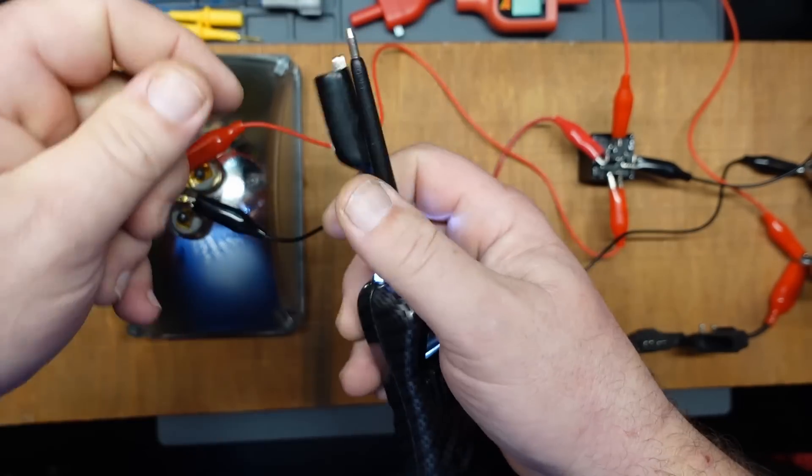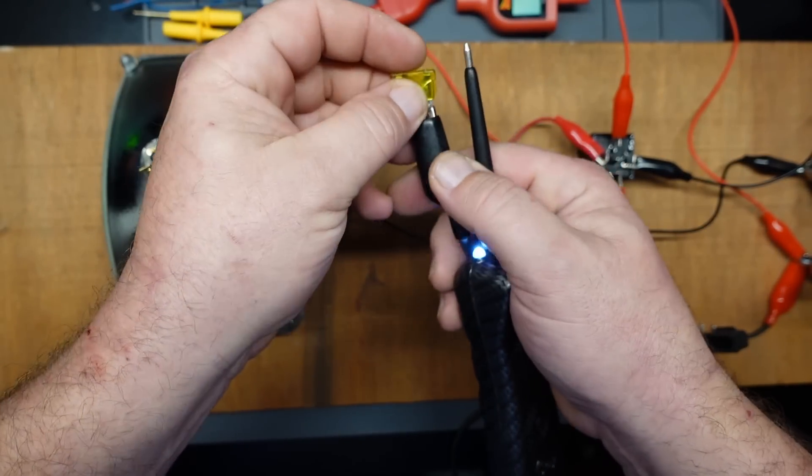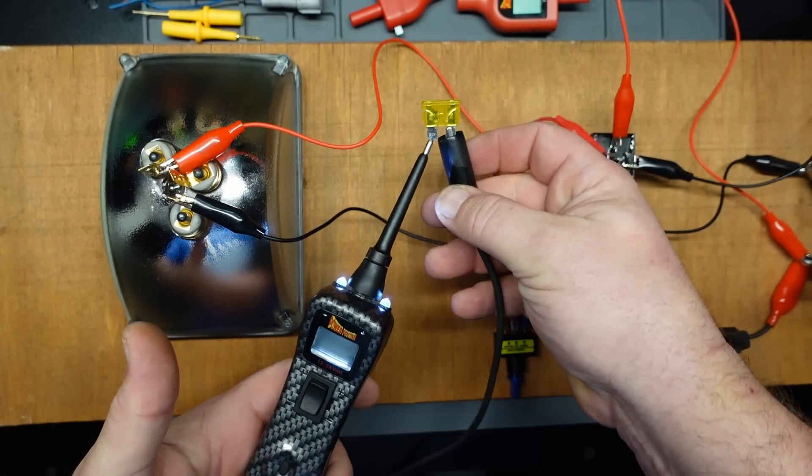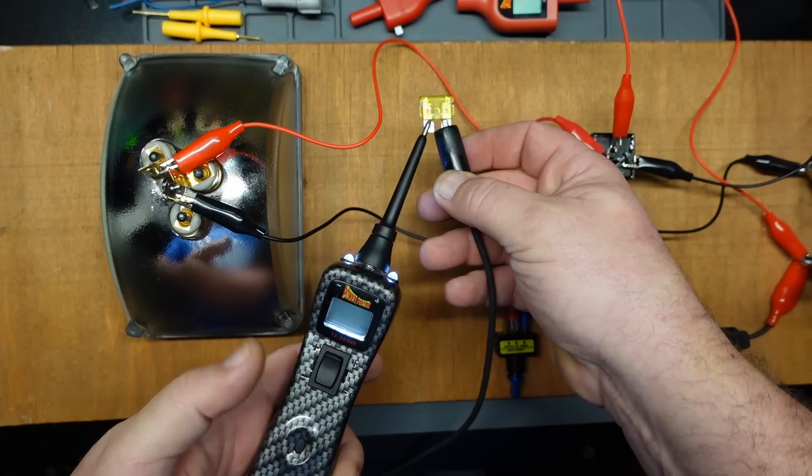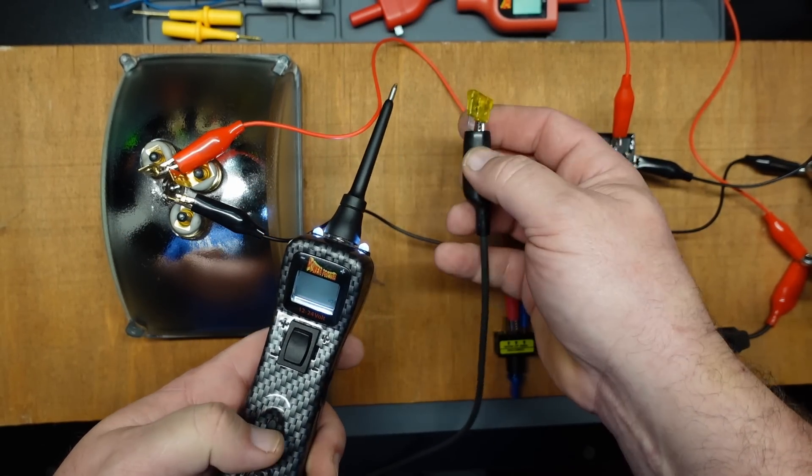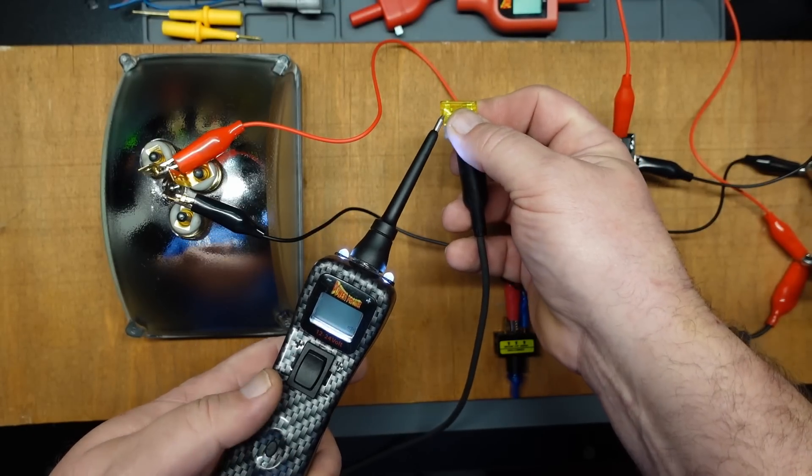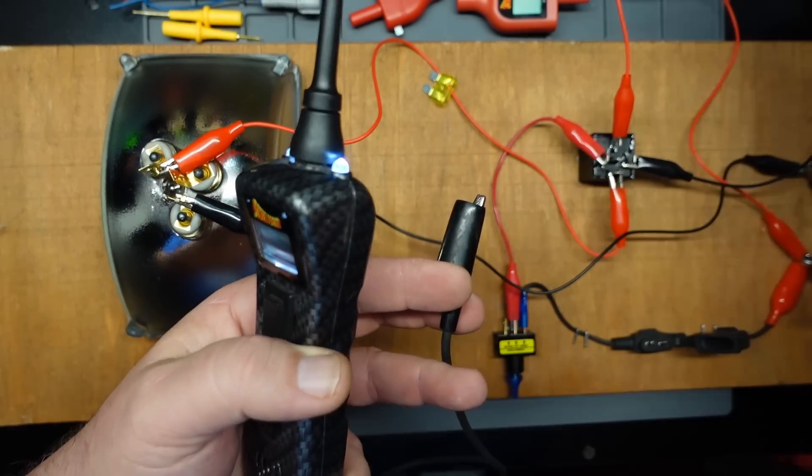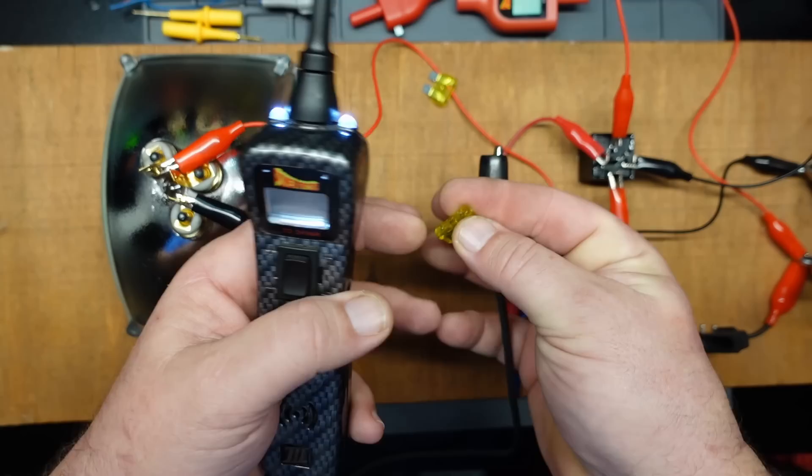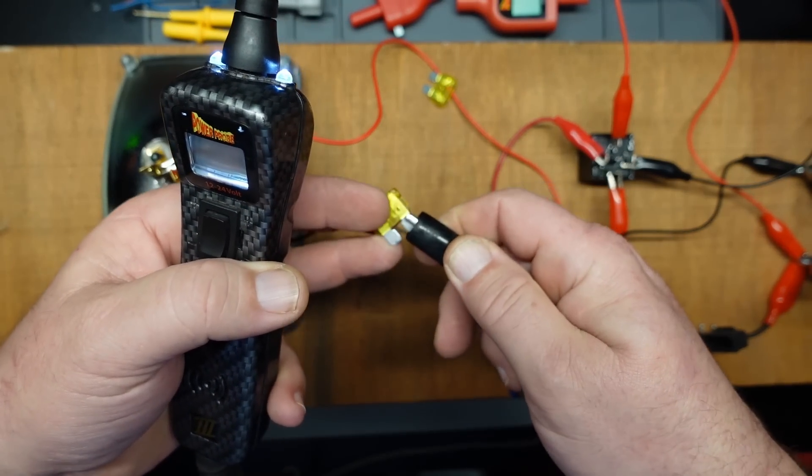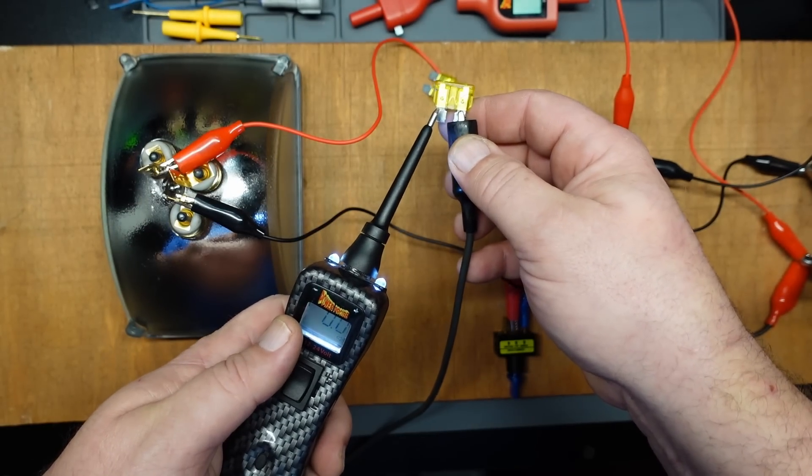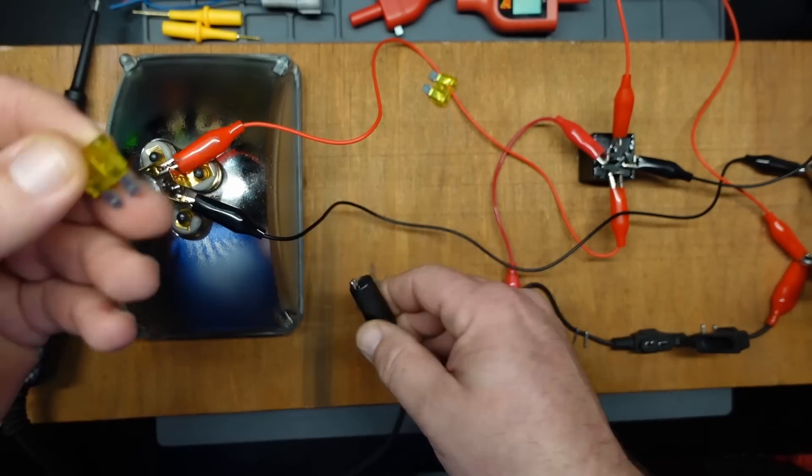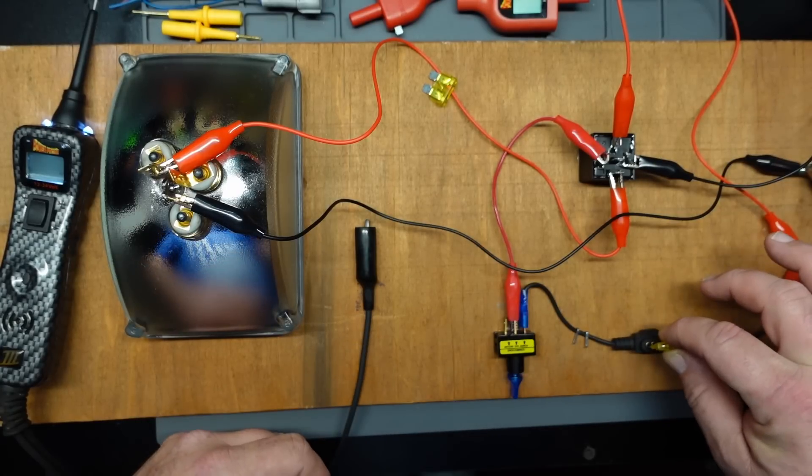We want to confirm that the actual fuse is blown. Come over here with the old continuity test with the external ground. Touch it. We'll turn the beeper back on. And, we got no continuity. So, let's go get ourselves a new fuse. Just check to make sure. And, now we got continuity through our fuse. So, now we know we got a good fuse. So, let's put that into the circuit.